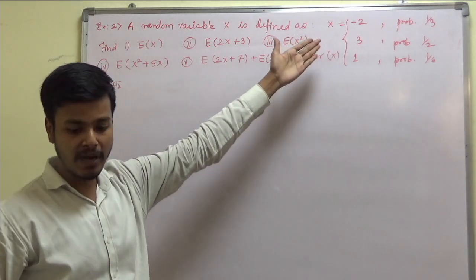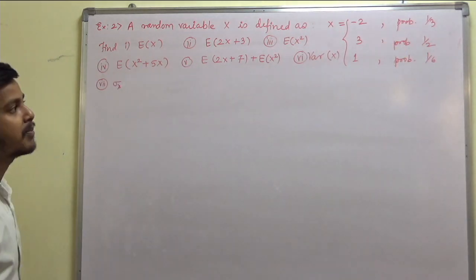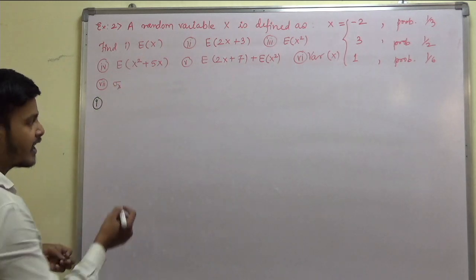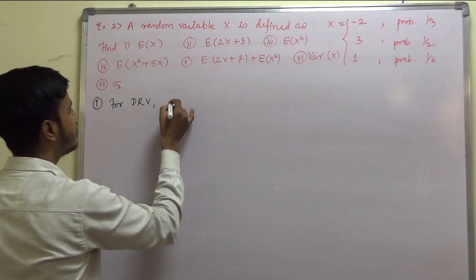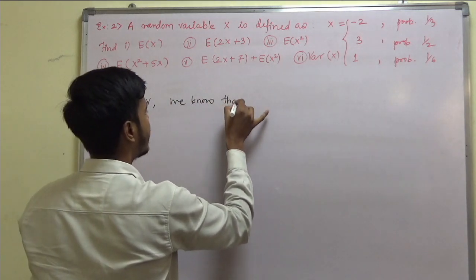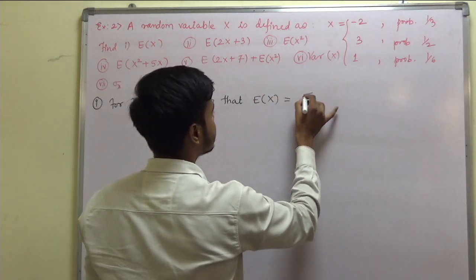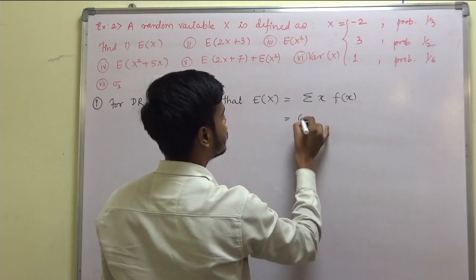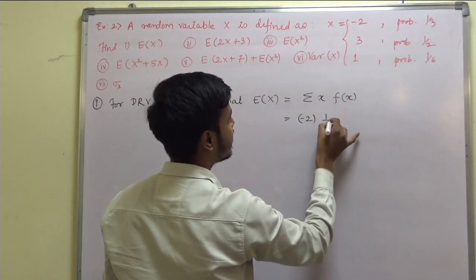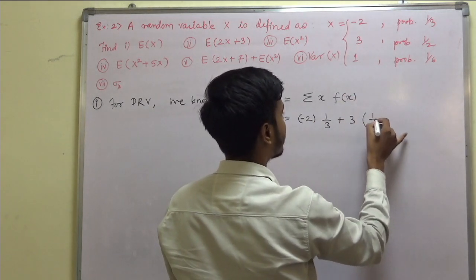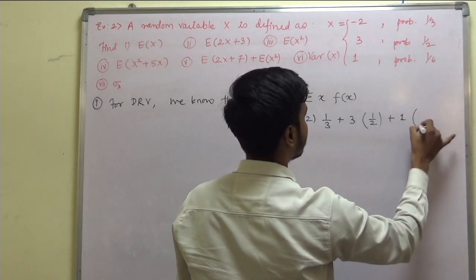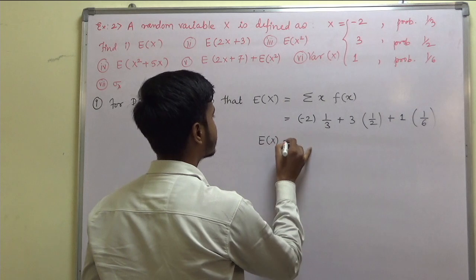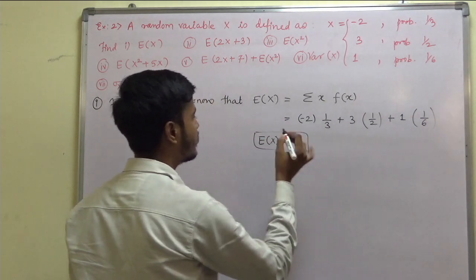We are given x having values minus 2, 3, and 1 with probabilities 1 by 3, 1 by 2, and 1 by 6. For discrete random variable, expectation of x is summation of x times f of x. For x equal to minus 2 we have probability 1 by 3; for x equal to 3 we have probability 1 by 2; and for x equal to 1 we have probability 1 by 6. When you solve this, the expectation of x comes out to be 1.